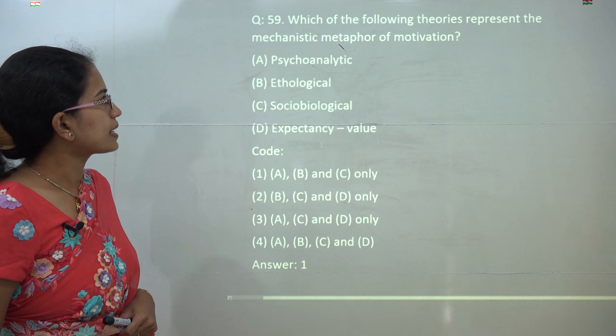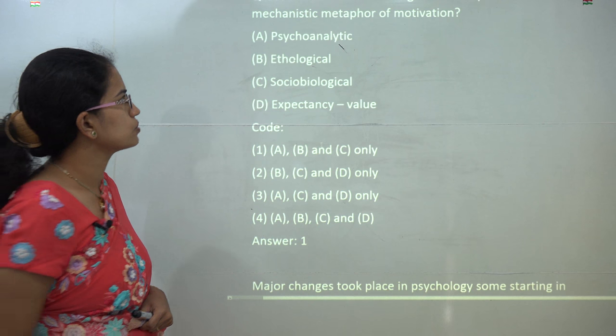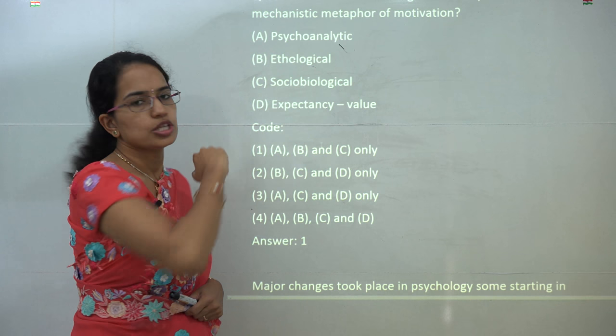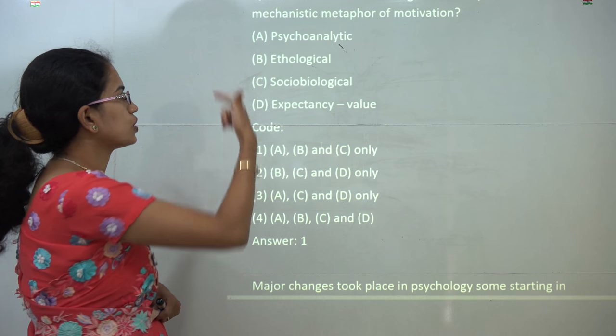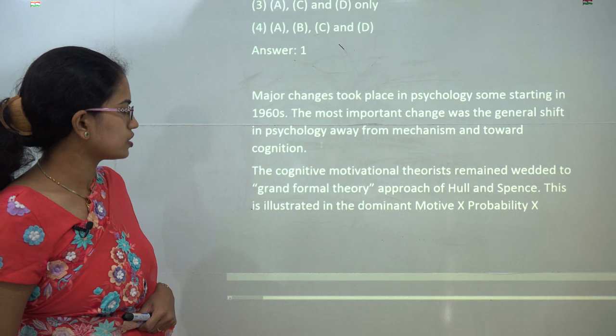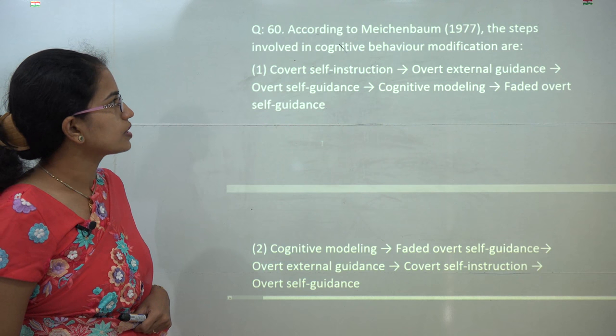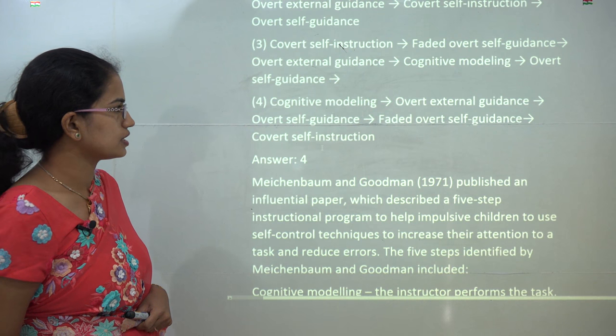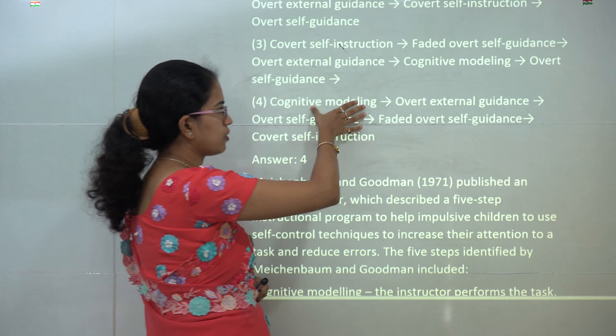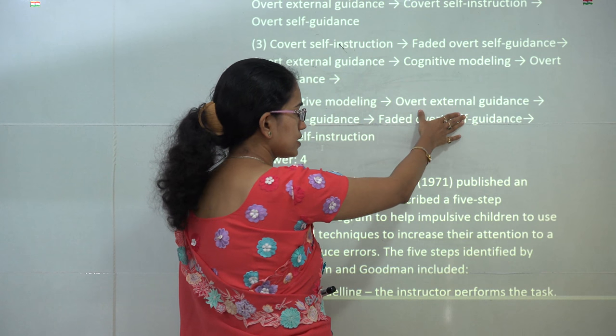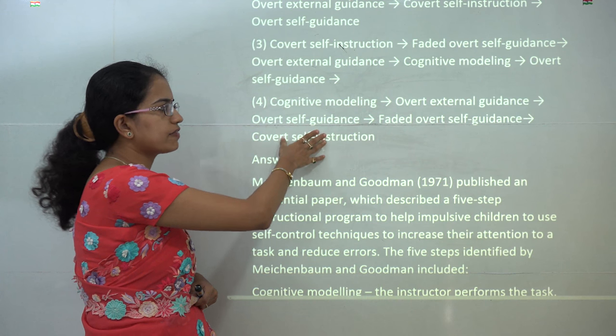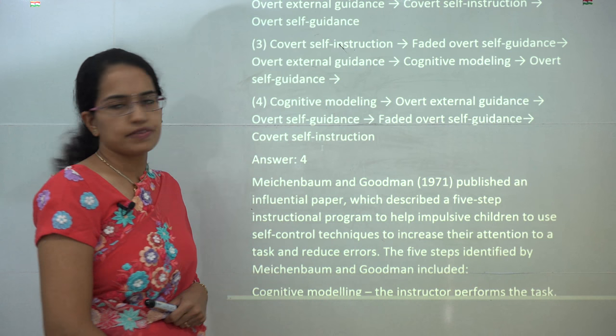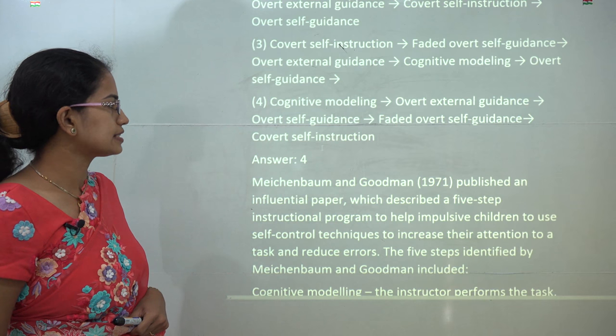Now next, mechanistic metaphor of motivation includes psychoanalytical, ethological, and socio-biological approach. So that is a kind of theoretical perspective to motivation. So A, B, and C would be the correct choices. The next question talks about McKenbaum's cognitive behavior modification. Under this modification, he gave the following series: firstly, you have the cognitive model, then an overt external guidance, a self-guidance, a faded overt self-guidance, and finally a covert self-instruction. So you have 4 as the correct answer. So it's a direct question you have to just answer it.